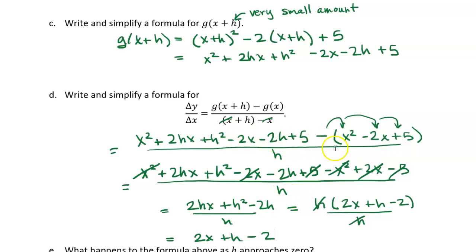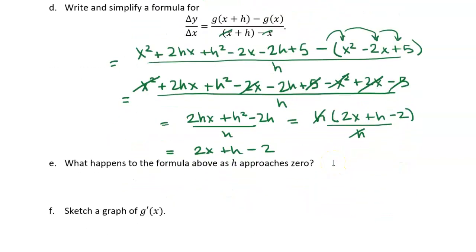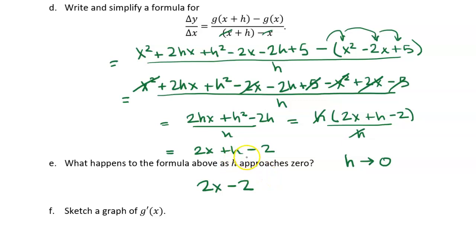That's pretty awesome. Now remember, h is a very small number. The smaller it is, the better the approximation for the instantaneous rate of change — the derivative. As h approaches zero, I can actually set h equal to zero, and I end up with 2x minus 2. This is g prime of x — the derivative of the original function g of x.